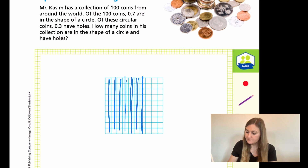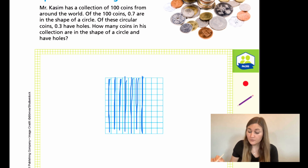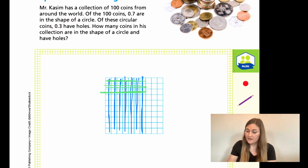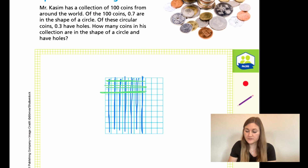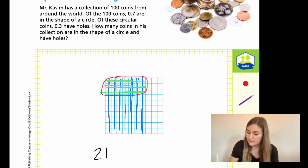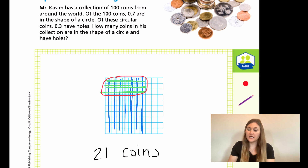Well, we know that it's 0.3. So, going the other way, I'm going to choose green. I'm going to fill in three rows going the other way, just up to the blue — one, two, and three. Now, it's asking how many coins total are both a circle and have holes. So, what I'm looking for is the amount colored in both blue and green, which is going to be 21 coins. That's how we multiply decimals up to the tenths using a visual model.